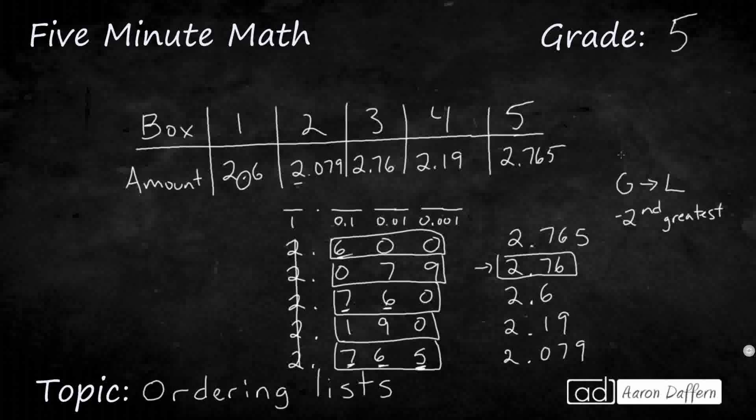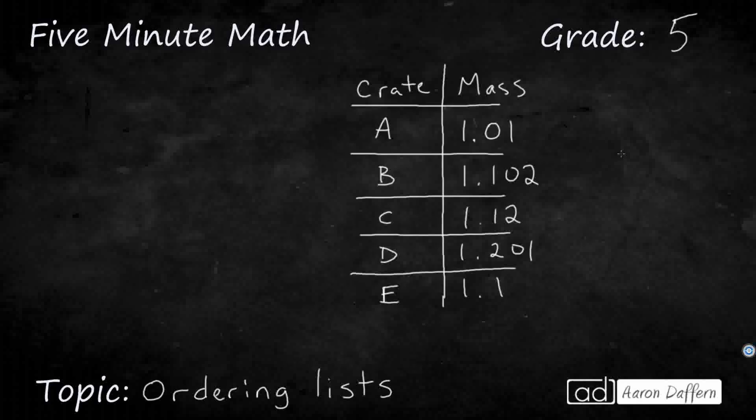Let's look at another example. So we are looking at a vertical oriented table here. We've got five different crates, we've got the mass. And this time let's go from least to greatest, and which one would be the fourth on that list or the fourth least?